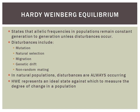In natural populations, the truth is that disturbances are always occurring — at least one of these things, usually multiples, is always occurring. So what Hardy-Weinberg Equilibrium does is it represents an ideal state against which to measure the degree of change in a population. Populations are always changing, but by looking at Hardy-Weinberg Equilibrium, we can see how they're changing.